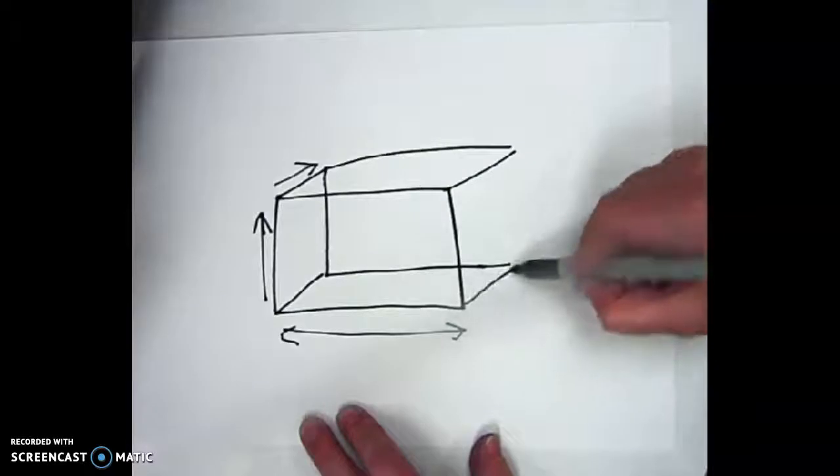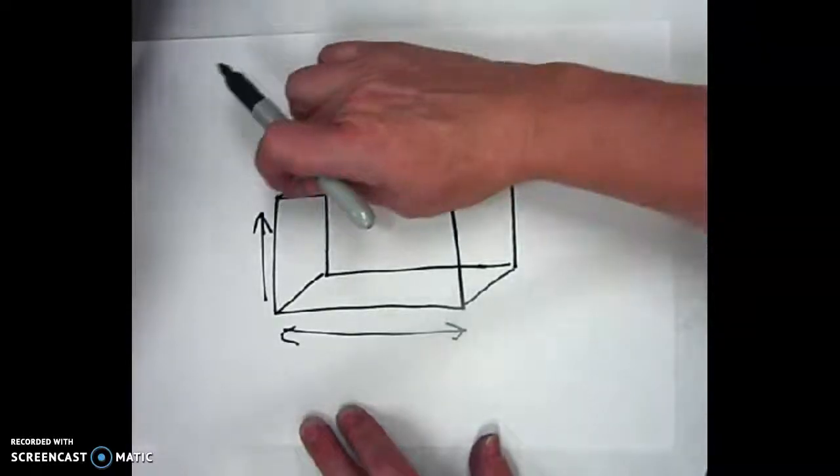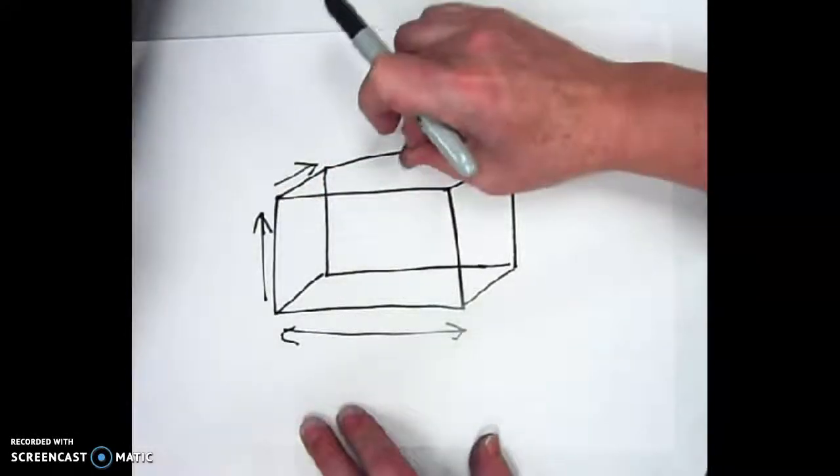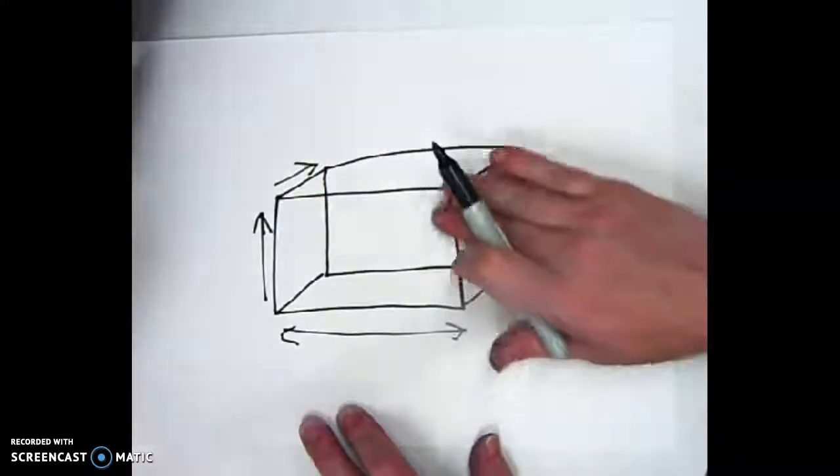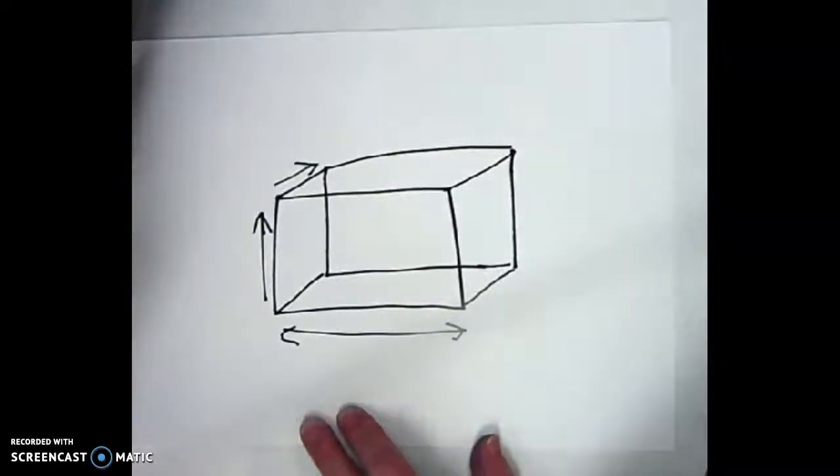Let's go ahead and finish that form. So as you can see, we now have something that goes back and has a whole other side. Now, this is just a box that looks three-dimensional. We're actually going to work three-dimensionally using clay.